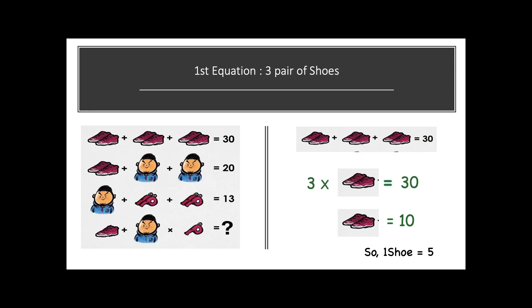So let's solve the puzzle, going on to the first equation. We will see that in our first equation there is a pair of shoes — we have got three pairs of shoes and the sum is equal to 30. So on solving it: 3 times a pair of shoes equals 30, so a pair of shoes equals 10. And if a pair of shoes equals 10, then one shoe equals 5.